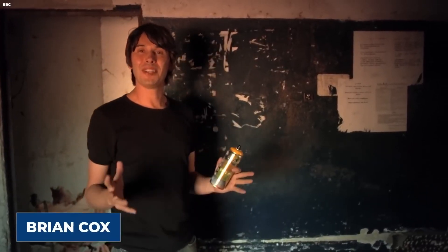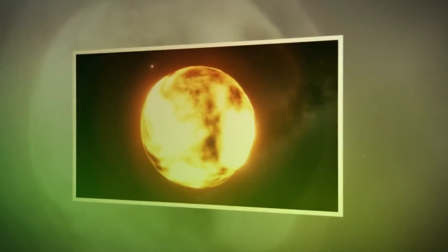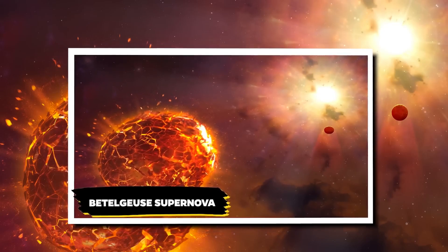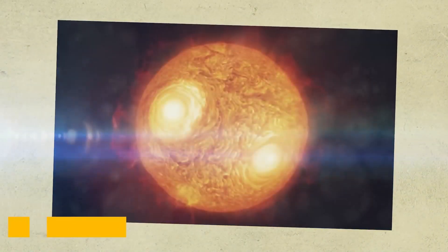If this star were to take over as the sun of our solar system, its influence would extend past Jupiter and the asteroid belt. This would result in the complete engulfment of Earth, Mars, Mercury, and Venus.